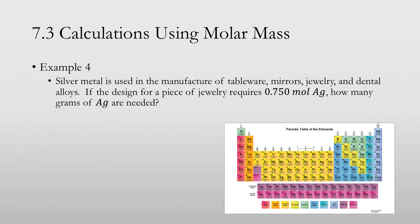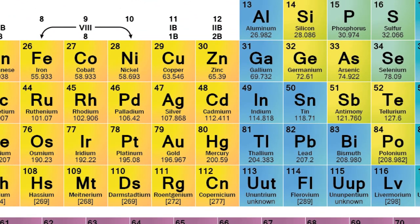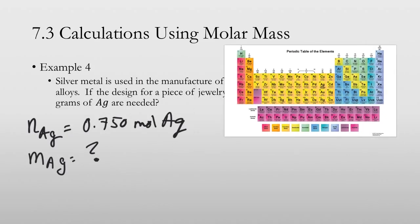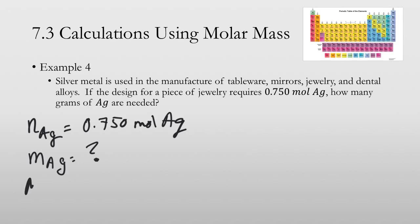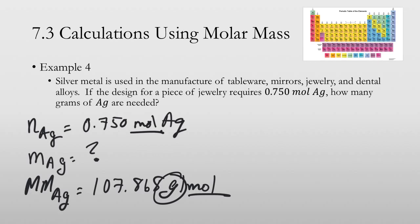Example 4 says silver metal is used in the manufacture of tableware, mirrors, jewelry, and dental alloys. If the design for a piece of jewelry requires three quarters of a mole of silver, how many grams of silver are needed? So the first thing we need to do is write down the information we're given. We have moles of silver equals 0.750 moles of Ag. What we want is mass of silver. We don't have that. So what we need to get almost always is the molar mass, and we've got it right here, 107.868. So the molar mass of silver is 107.868 grams per mole. We have moles, and it's in the molar mass, and we want the mass, so all we need to use are these two numbers.